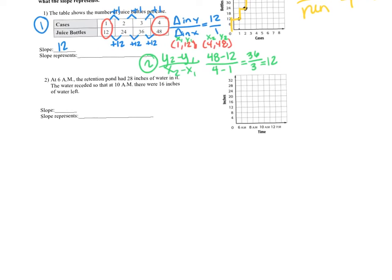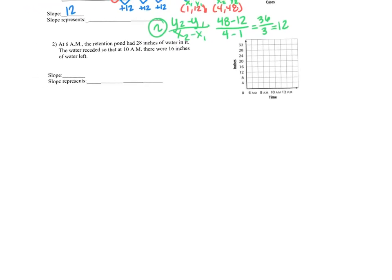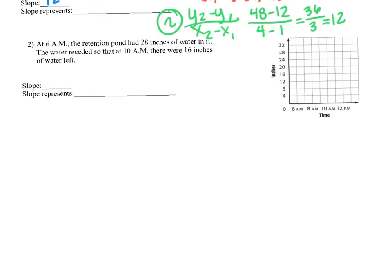Now, number 3, or number 2 changes a little bit. So I'm going to talk. So, number 2. We're not going to do the points on this one because it's a little bit difficult because it's dealing with time. But we are going to graph the points. So at 6 a.m., we're going to say 6 a.m., 28 inches. And then at 10 a.m., it was 16 inches. So I'm just going to graph those two.